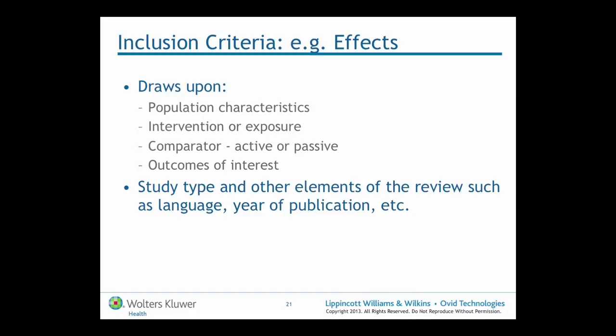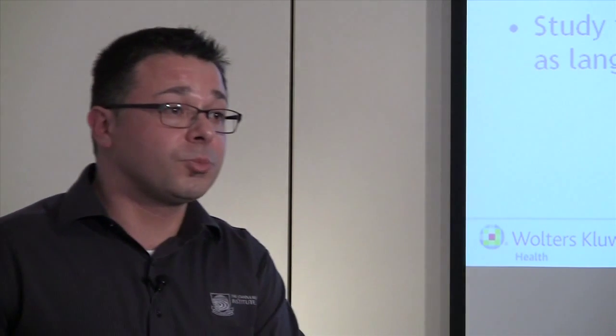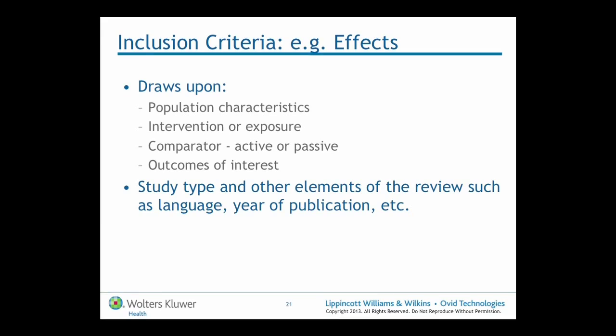Once we've asked a question, we use those concepts to develop the important eligibility criteria. What are the important characteristics of the population — are we interested in children or adults? If we're interested in diabetics, is there some aspect of setting that matters, such as those receiving treatment in the community versus the hospital? We define the intervention — is it an IV or oral drug? The comparator — are we comparing to another drug or a placebo? And, of course, the all-important outcomes of interest. The appropriate study type is derived directly from the question being asked.